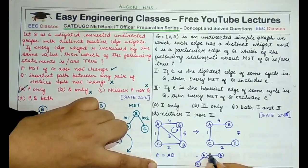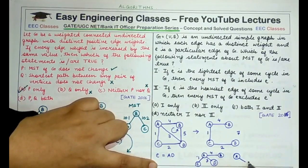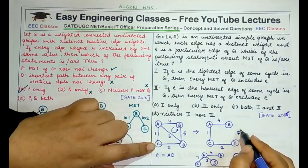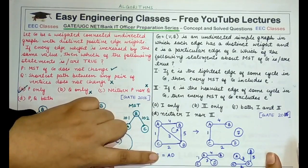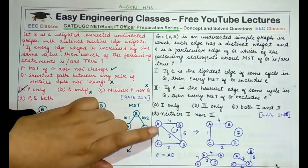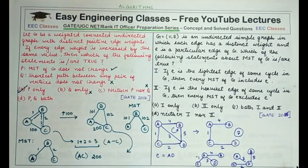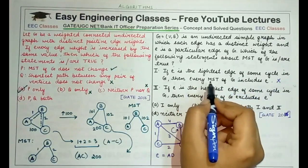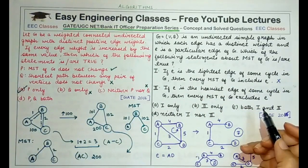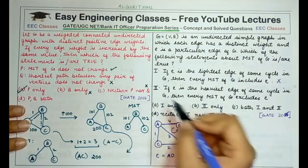If we include edge AD in the MST, various combinations give sums of 8 or 10, both exceeding 7. So even if an edge is the lightest in some cycle, it is not necessary that it will be included in the MST. Statement 1 is false.